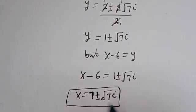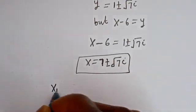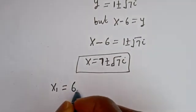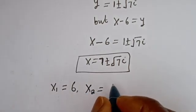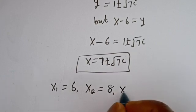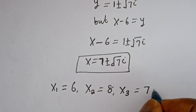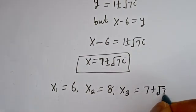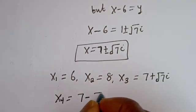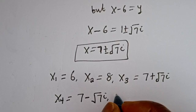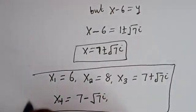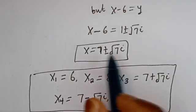Therefore our final answers are: x₁ equals 6, x₂ equals 8, x₃ equals 7 plus i√7, and x₄ equals 7 minus i√7. I hope you enjoyed the video. Thank you for watching. Please don't forget to like, share, comment, and subscribe to my channel. Bye bye.